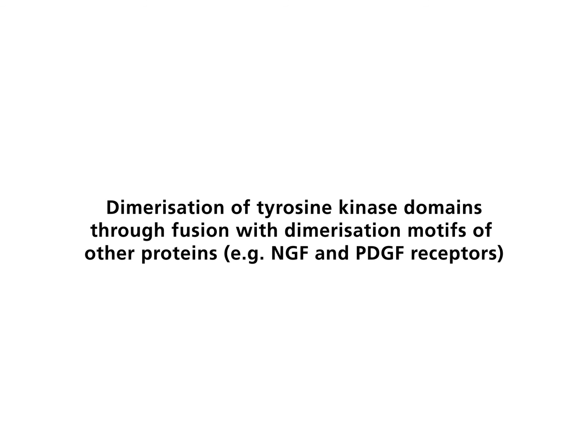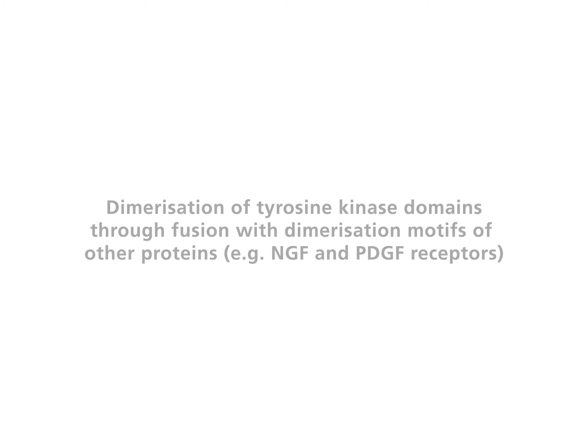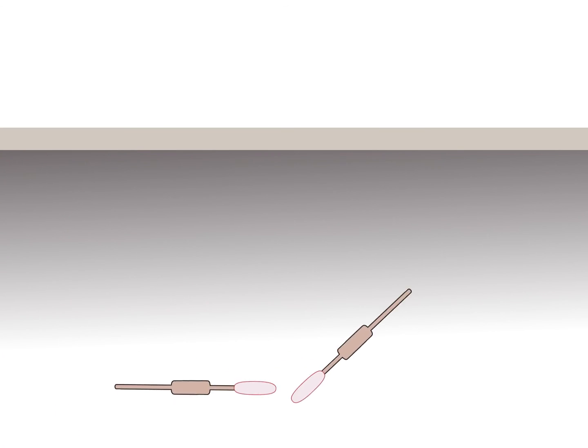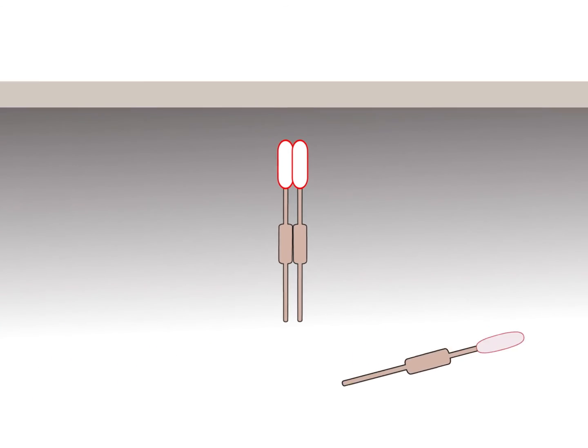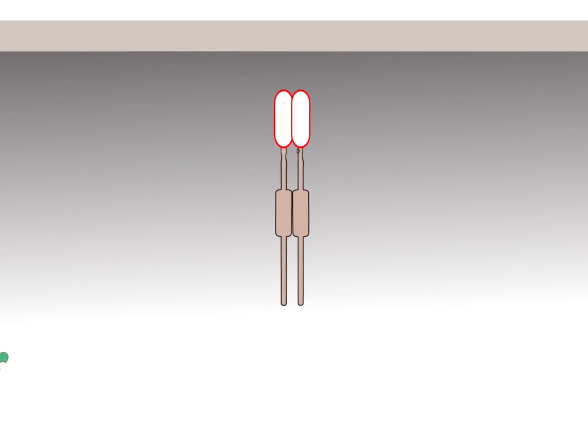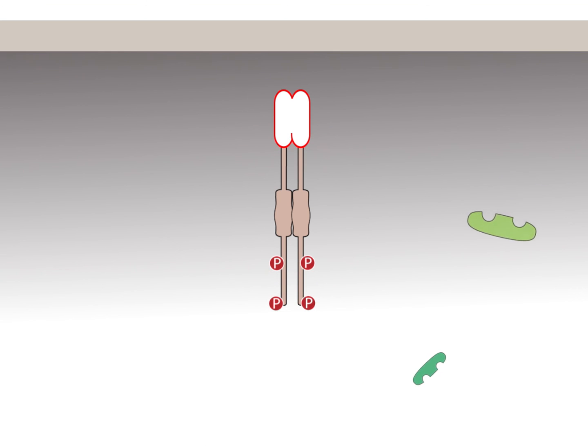Dimerization of tyrosine kinase domains through fusion with dimerization motifs of other proteins — for example, NGF and PDGF receptors. Oncogenes may code for fusion proteins that contain tyrosine kinase domains and dimerization motifs from unrelated proteins. The resulting dimers are constitutively active.